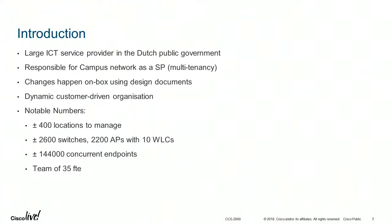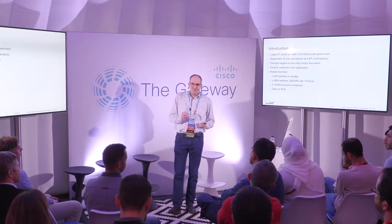The customer is a large ICT service provider in the national government. They provide ICT services for roughly six to eight departments in the Netherlands and also provide network services for buildings in the Netherlands and worldwide. To give you some numbers: 400 locations worldwide, roughly 100 in the Netherlands, 2,600 switches, 2,200 access points, a couple of wireless LAN controllers — roughly 145,000 endpoints on an average day. They are responsible for the LAN, wireless, and WAN connecting all these devices to data centers, done in a multi-tenancy environment.